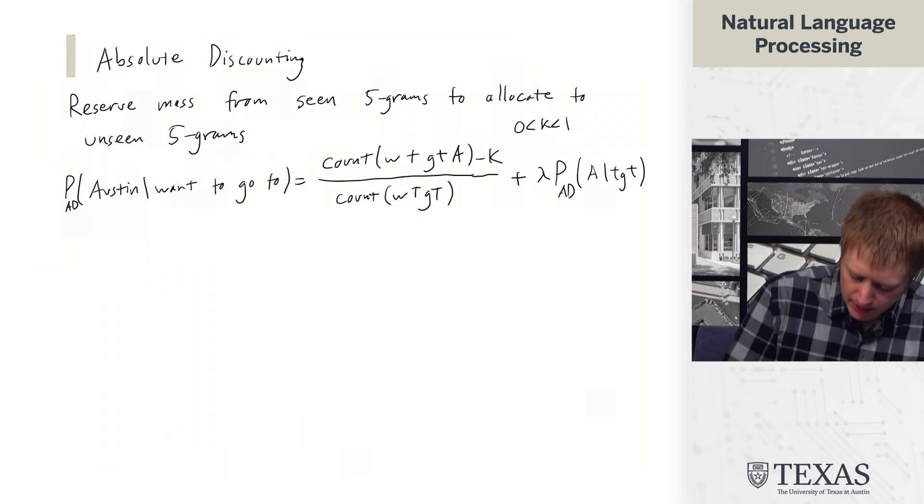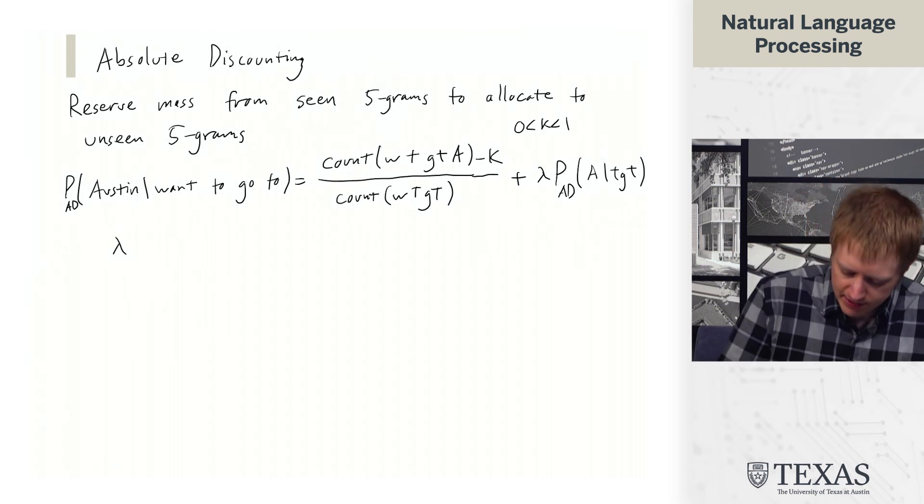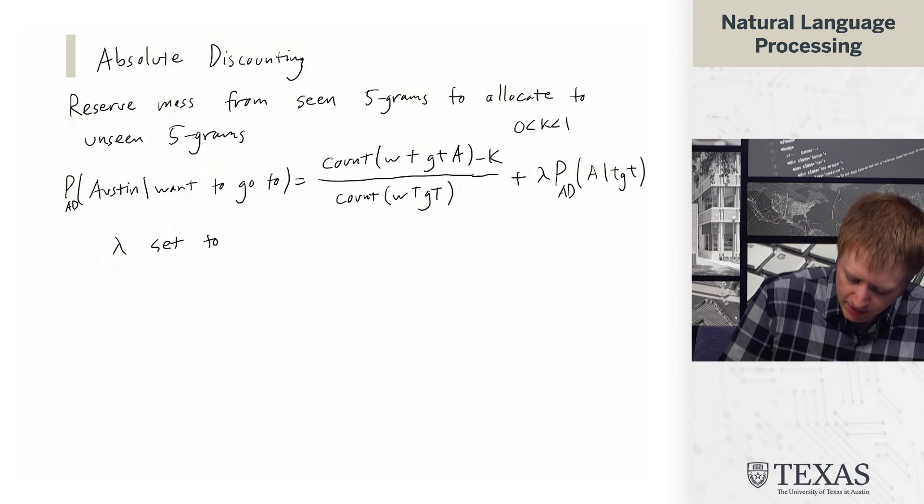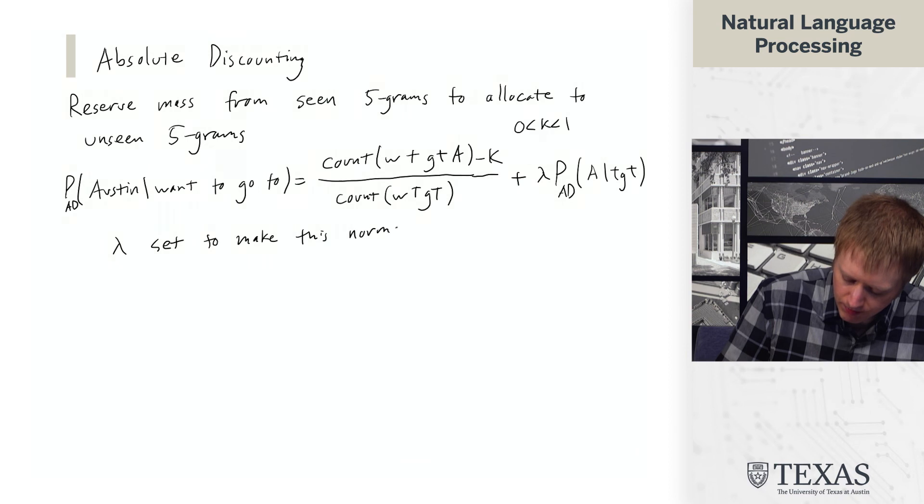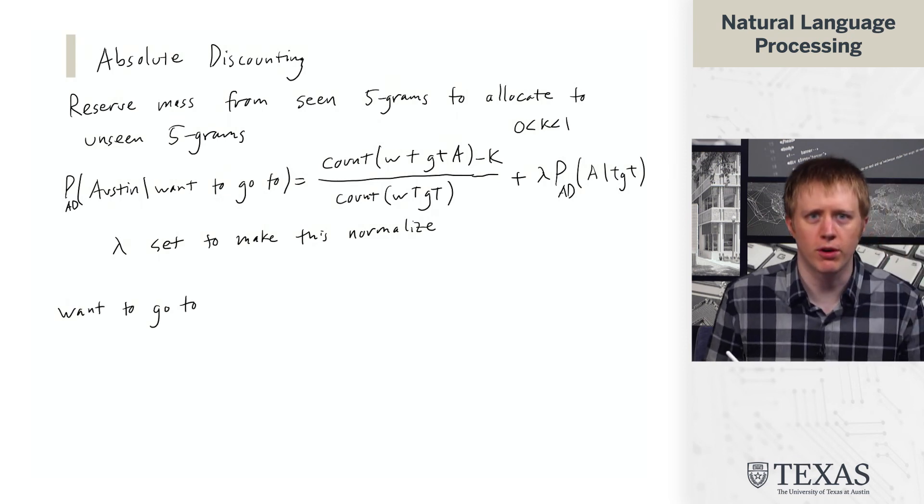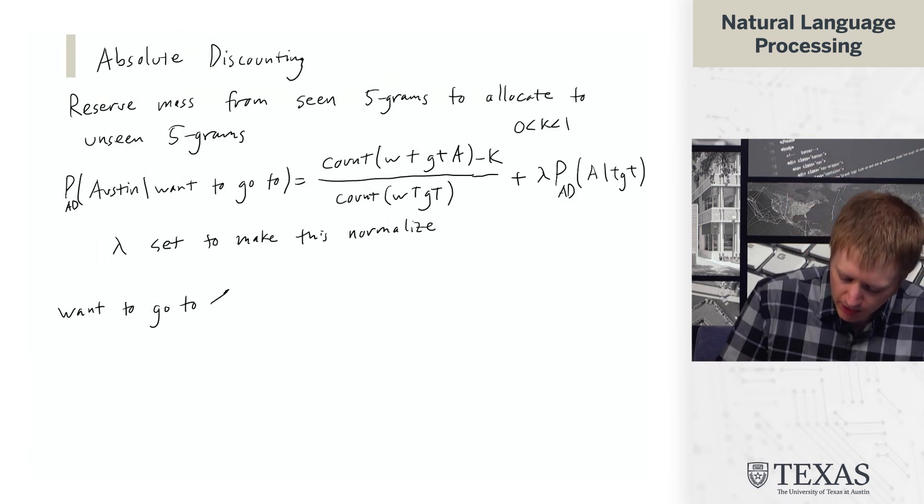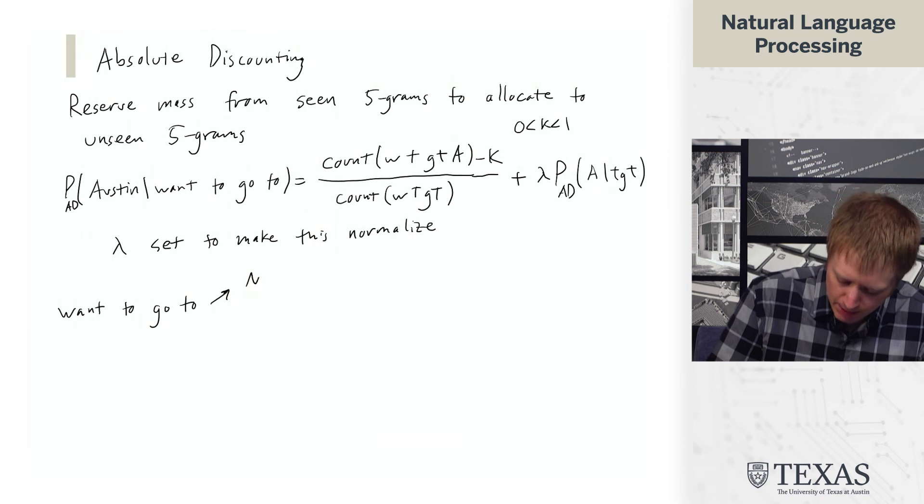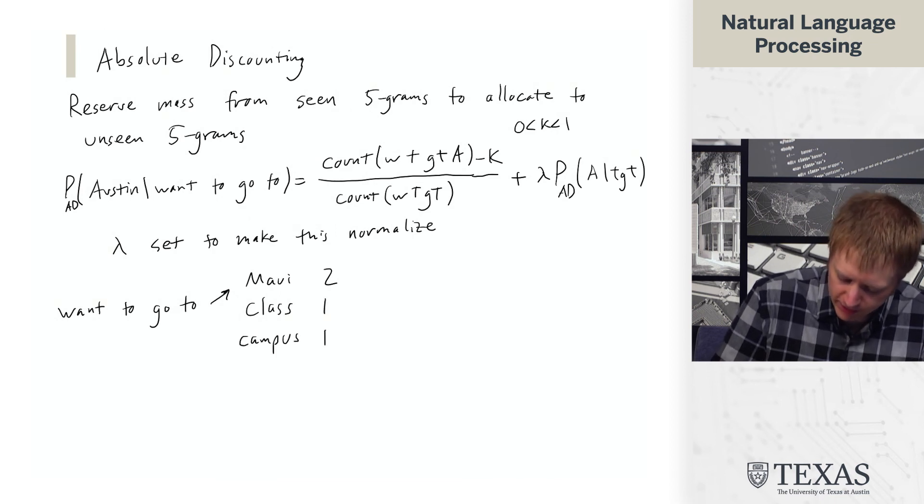So lambda here is set to make this normalize. So let me show you an example of this. So if we have the context want to go to, maybe we observe this four times in our data. And we see want to go to Maui twice. We see want to go to class once and want to go to campus once. We're very studious here.